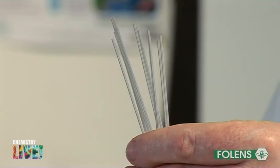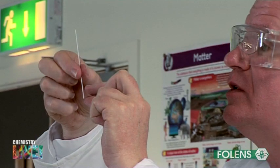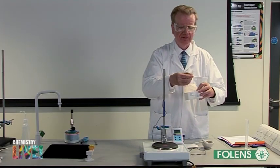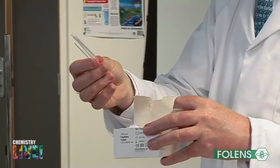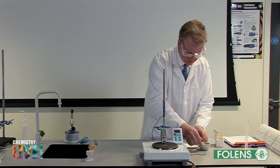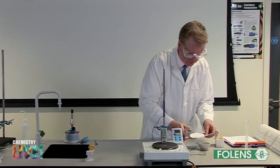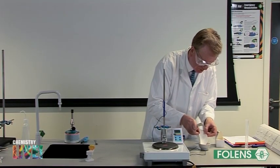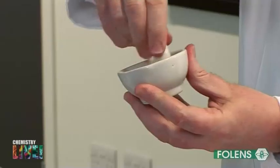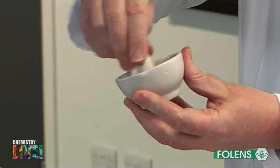To measure the melting point of the crystals, we place them in a very narrow glass tube called a capillary tube. To help them fit in the tube, we grind up the crystals. A pestle and mortar is used to grind up the crystals.